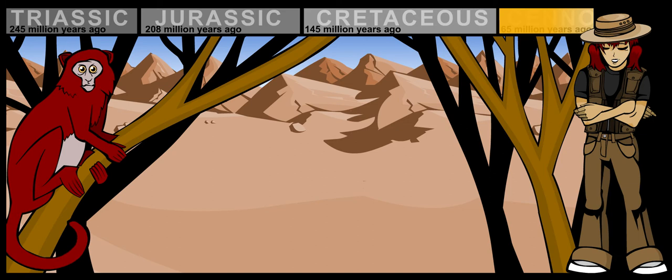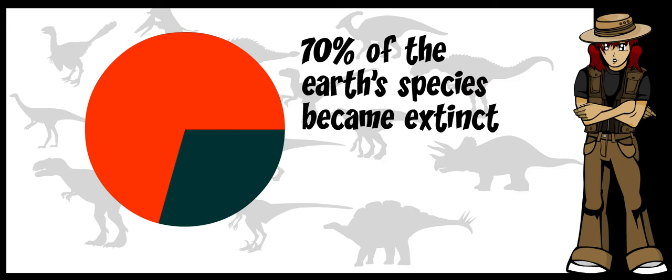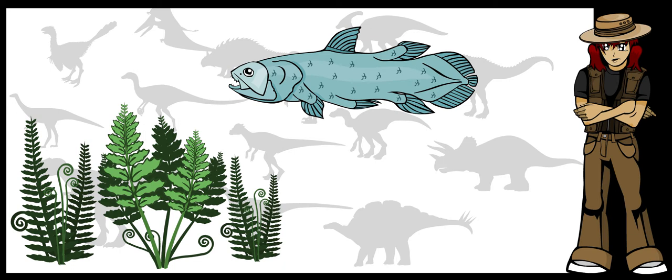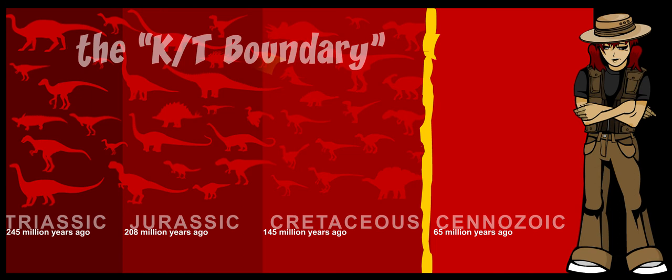So what happened to all the dinosaurs? Well, around this time, all the dinosaurs died out. In just a few thousand years, 70% of the Earth's species became extinct. Many smaller creatures, including fish, plant life, and mammals survived that are still with us today. But the great age of the dinosaurs was over. It happened so quickly that we call it an extinction event. We call this great extinction the K-T boundary.